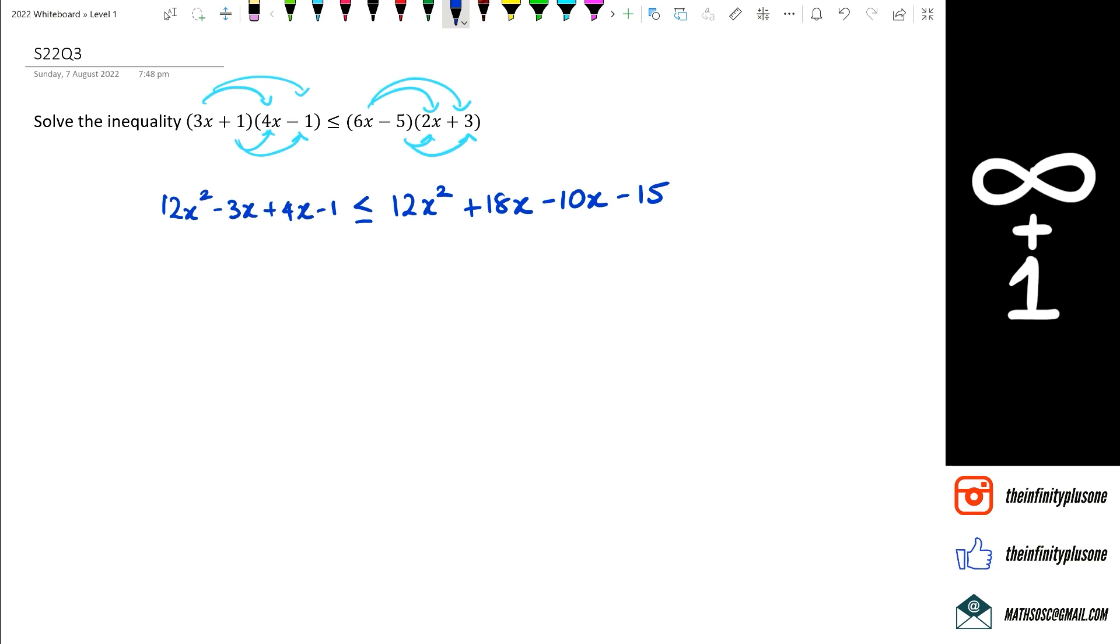Once I have this, what I want to do is I want to bring all the x's to one side and all the numbers to the other side. Now I can kind of see the 12x squared is going to cancel out each other. So I am going to be bringing this 12x squared to the left hand side, which means it's going to become minus 12x squared. So negative 3 and positive 4 is 1x.